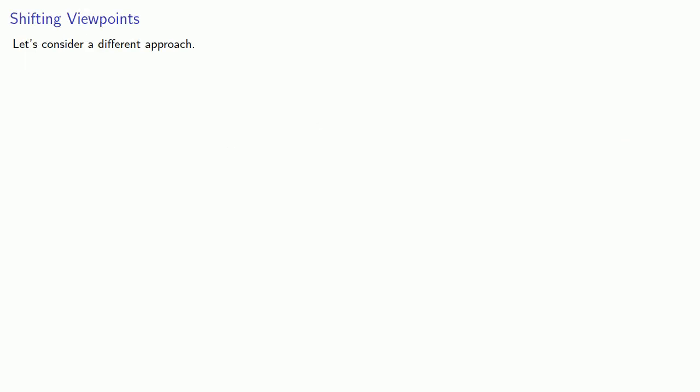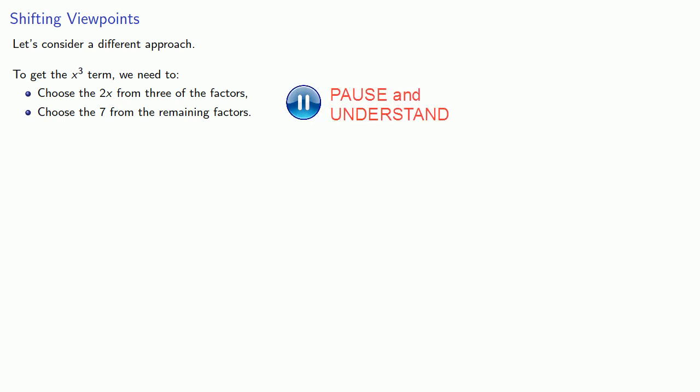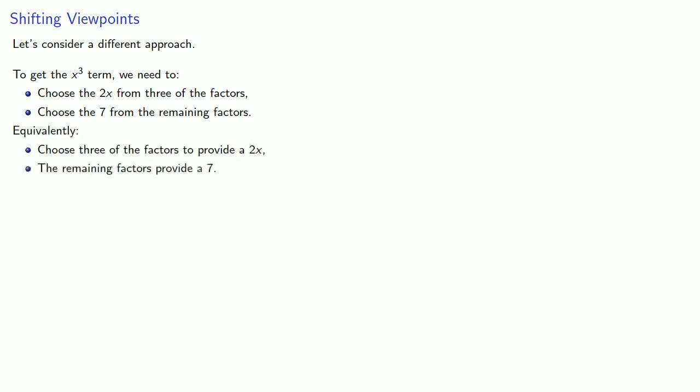Let's shift viewpoints a little bit. To get the x cubed term, we need to choose the 2x from three of the factors and then choose the 7 from the remaining factors. Equivalently, we might just say choose three of the factors to provide a 2x, and the remaining factors will provide a 7. The question we want to ask is, how many ways can we do this?